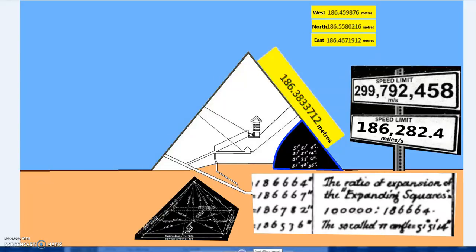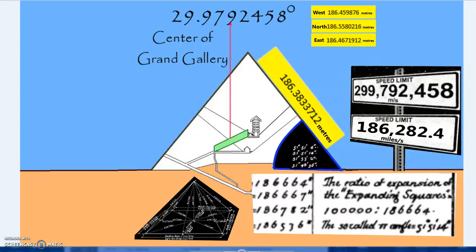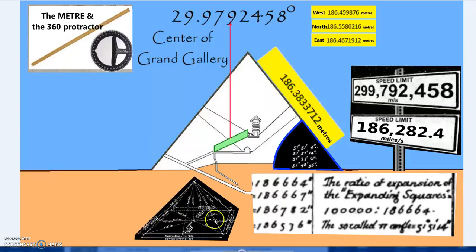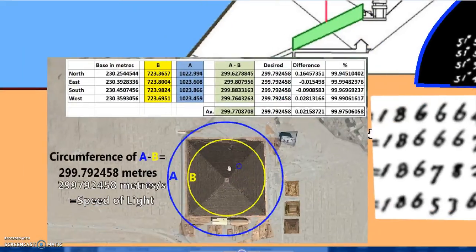And that things such as the meter, the cubit, and the foot are not just as arbitrary without deeper information as what we think. It's actually, they're bulging with information. But so we also have the speed of light meters per second at the center of the Grand Gallery, the meter, the 360 degree protractor, we'll just call it the compass, 360 degrees.